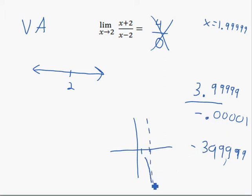If I plug in numbers a little bit bigger than 2, so instead of 1.99999, if we plug in a number like 2.00001, a number super close to 2 but on the right-hand side, we're going to find out that the top is still close to 4. It's going to be 4.00001.